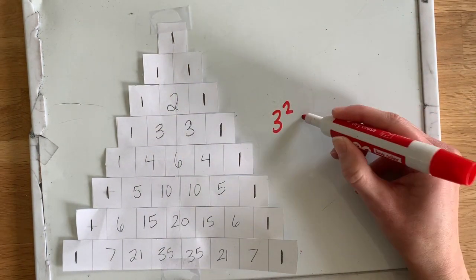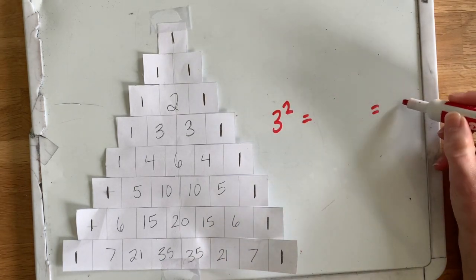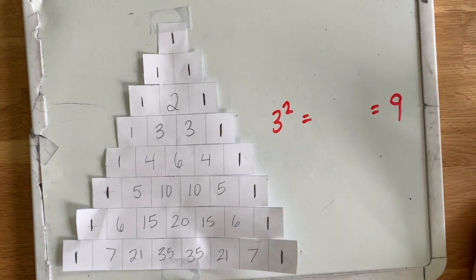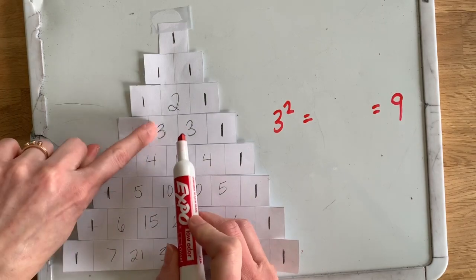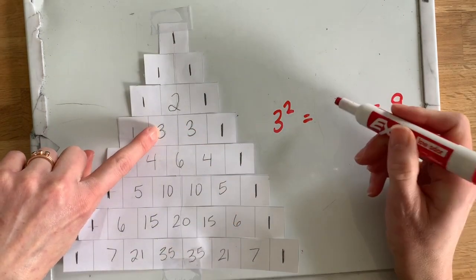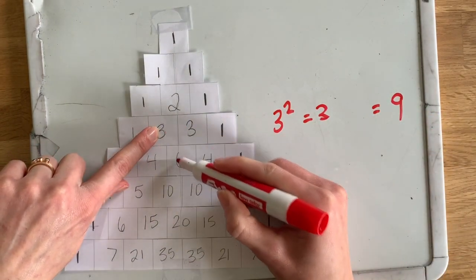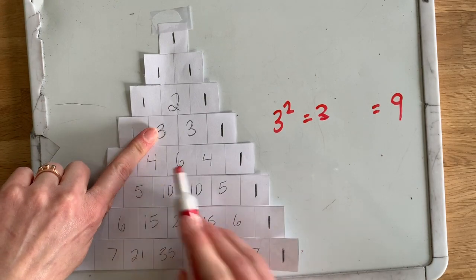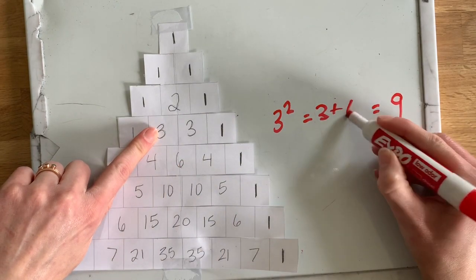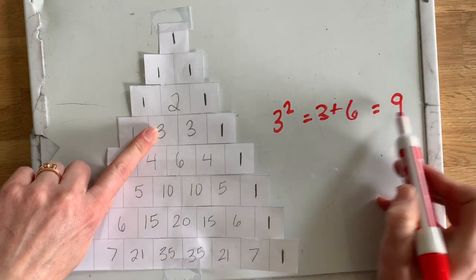So 3, let's try the 3 right here. 3 squared, well we know it's going to equal 9. 3 times 3 is 9. So if we look next to it, that's 3. We look diagonally below it, that's 6. 3 plus 6 equals 9.